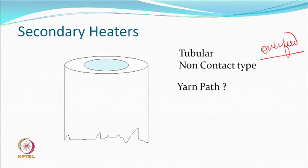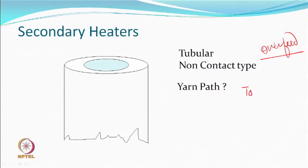The yarn path is an important consideration in the secondary heater. The yarn will invariably be passed through the heater from top to bottom and not from bottom to top. Similarly, this heater will always be vertical and not horizontal. In the primary heater orientation does not matter; in the cooling plate orientation does not matter because the yarn is under tension and in contact with the plate. The yarn path is always top to bottom in the secondary heater.